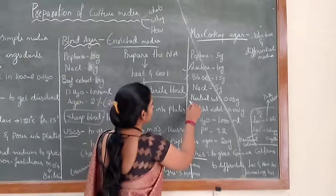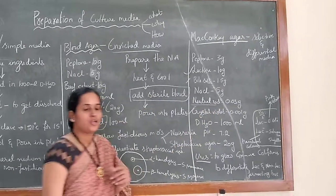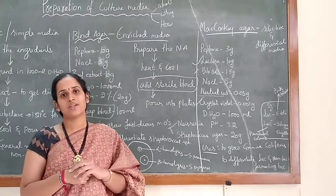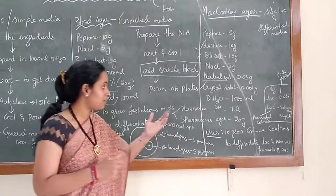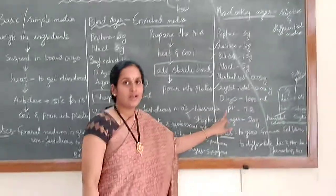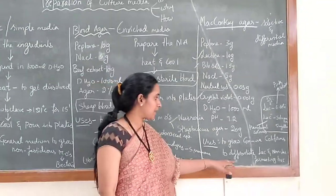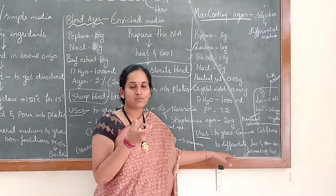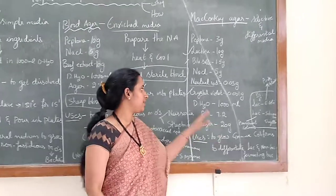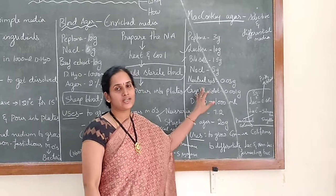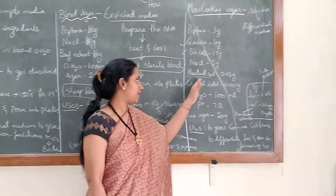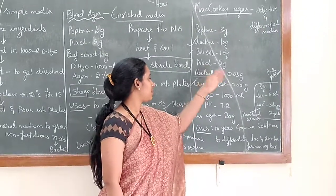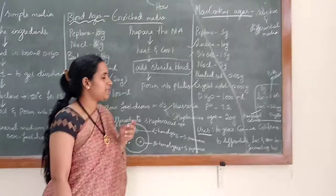Neutral red changes its color when there is a deviation in the pH of the medium. After bacterial growth, specific types of bacteria cause pH variation, and that variation can be detected by the color change in the medium indicated by neutral red. NaCl is used to maintain the pH of the medium.